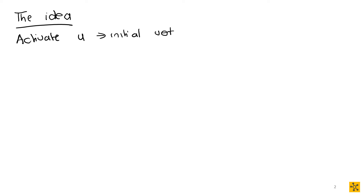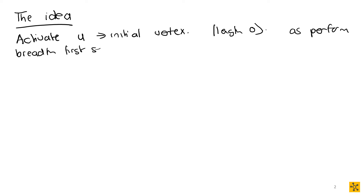You activate U as your initial vertex — your root vertex — and give it level zero, or a length of zero. Then as you perform the breadth-first search, every level adds a length of one. So the initial vertex is length zero, the next level is length one, and you keep going until you hit whichever vertex you're looking for — vertex B in that situation.